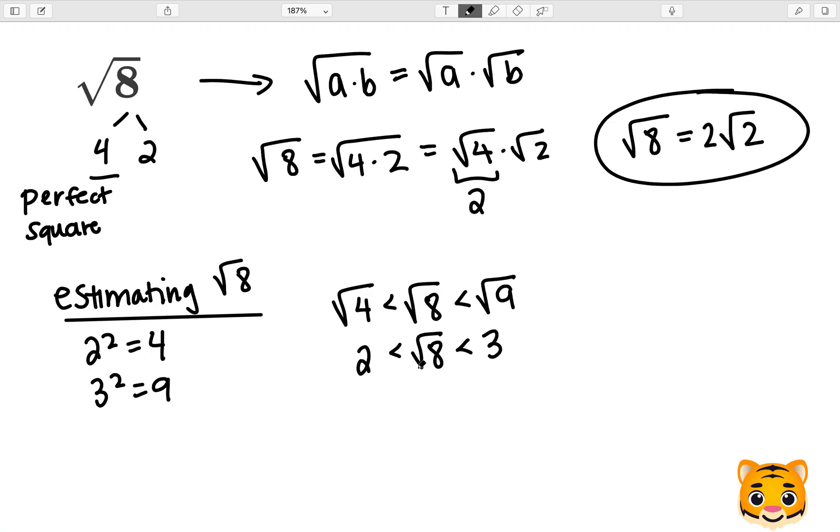In order to find out which value the square root of 8 is closer to, we will find the difference between 8 and the perfect squares. So we'll do 8 minus 4 giving us 4, and 9 minus 8 giving us 1.